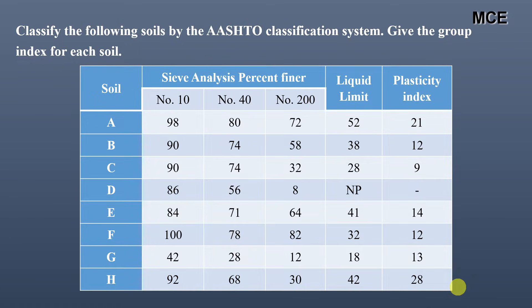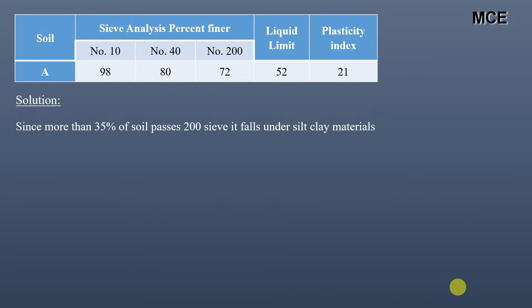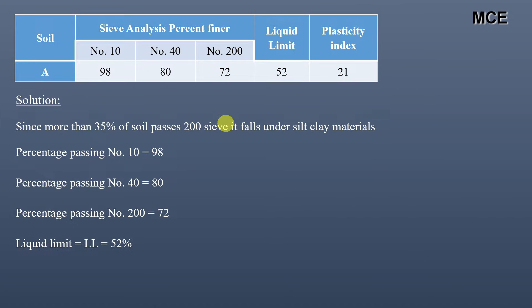First let us take soil sample A. For this soil I can see that more than 35% — that is 72% — of the soil passes sieve number 200. It means that this soil falls under the silt-clay materials. The percentage passing sieve number 10 is 98, for sieve number 40 it is 80, and for sieve number 200 it is 72. The liquid limit of the soil is 52 and the plasticity index is 21.